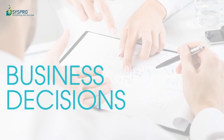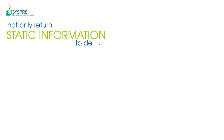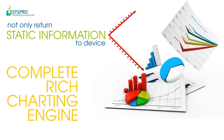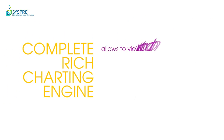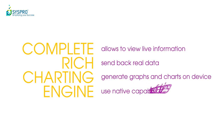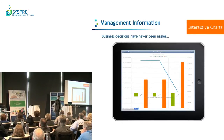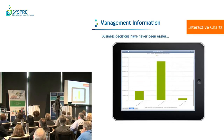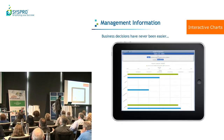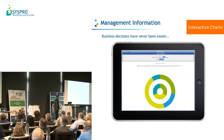Business decisions have been made a lot simpler. We don't just return static information to your device — we also have a complete rich charting engine. The charting engine not only allows us to view live information, but it doesn't send back an image. It actually sends back the real data, and graphs and charts are generated on the fly on these devices using their native capabilities, which allows us to do quite clever things. Our charts are interactive — we can do drill-downs, switch from bar charts to pie charts to radar charts to donut charts. Completely up to you.